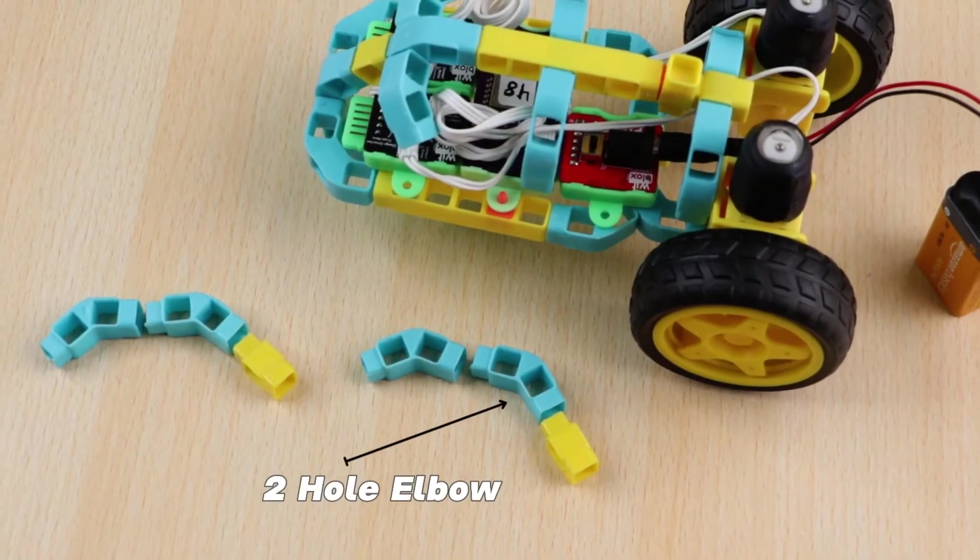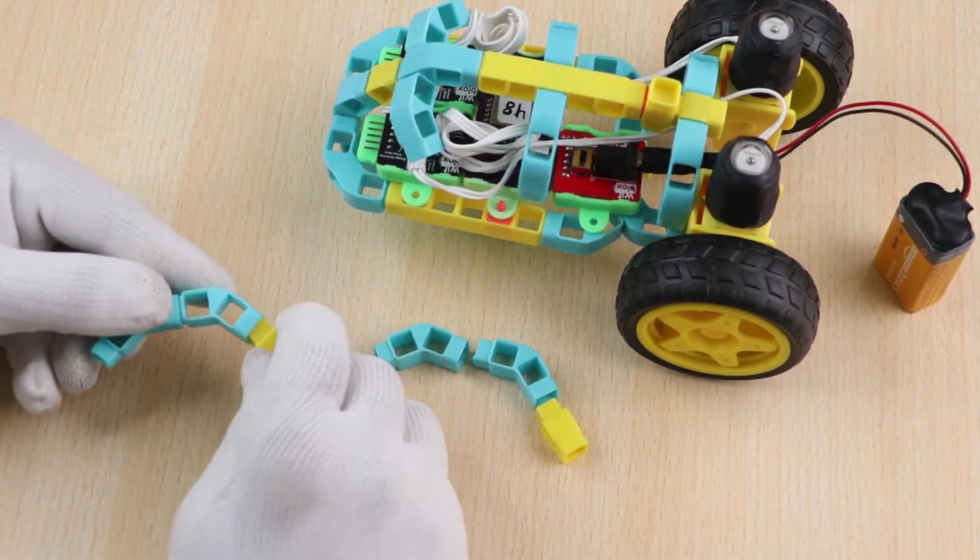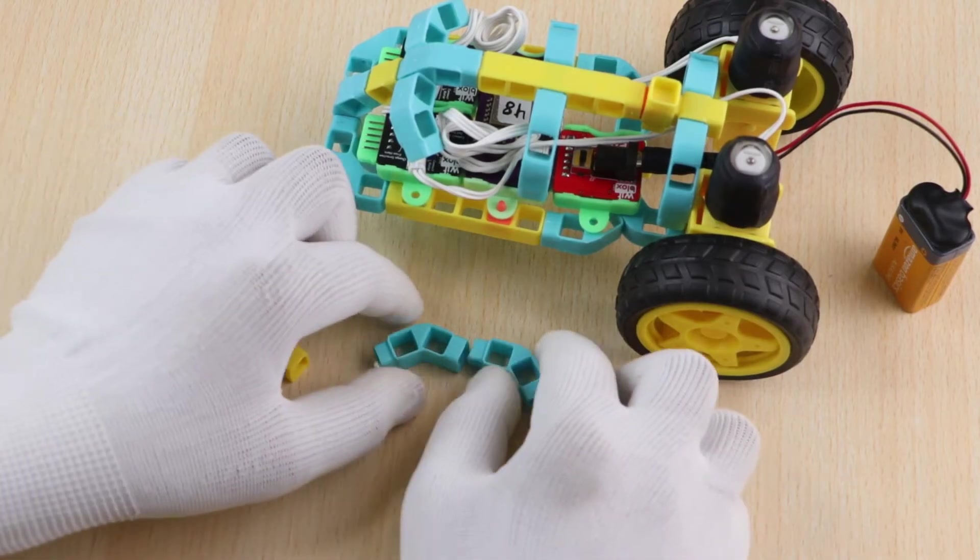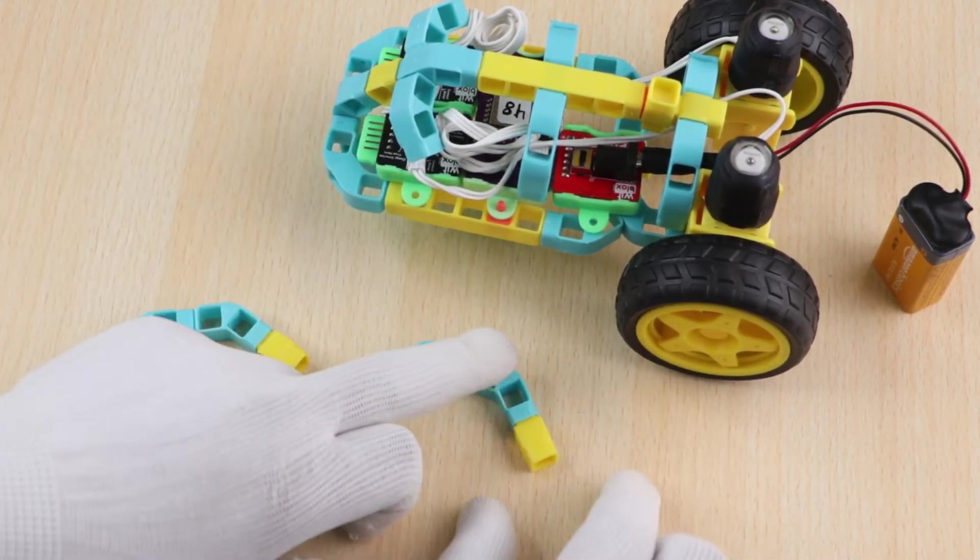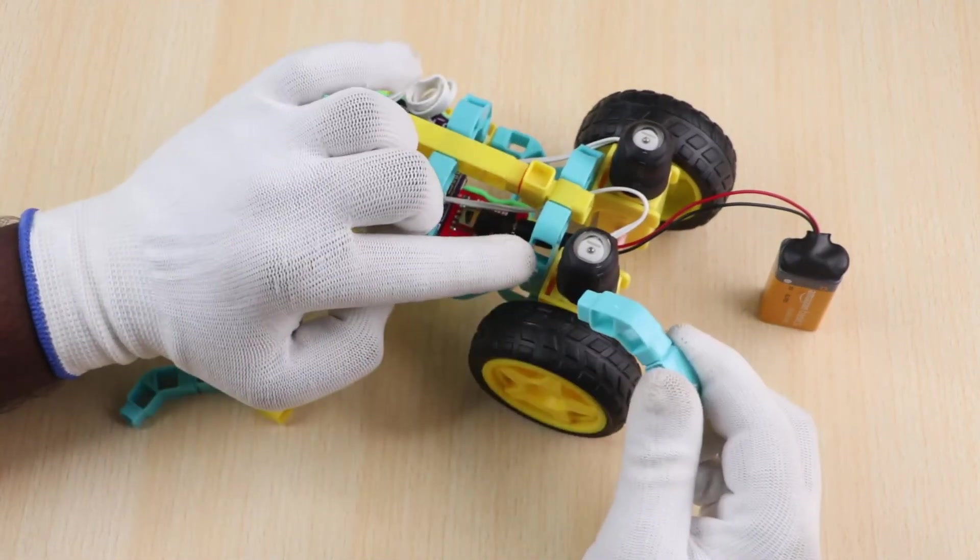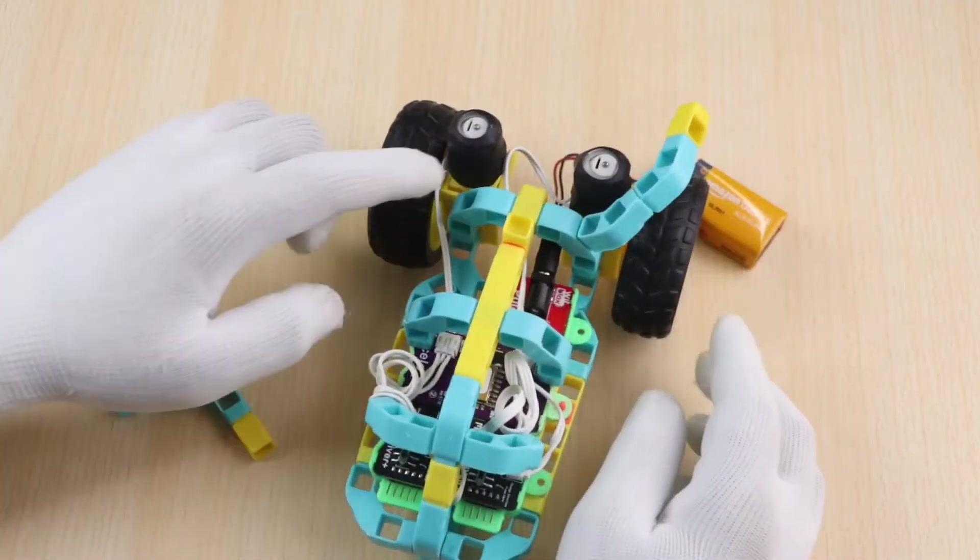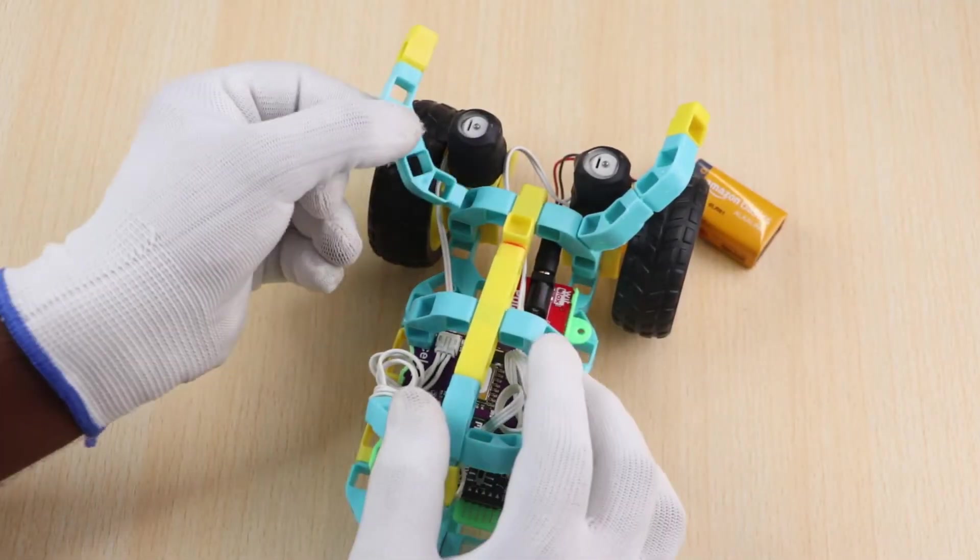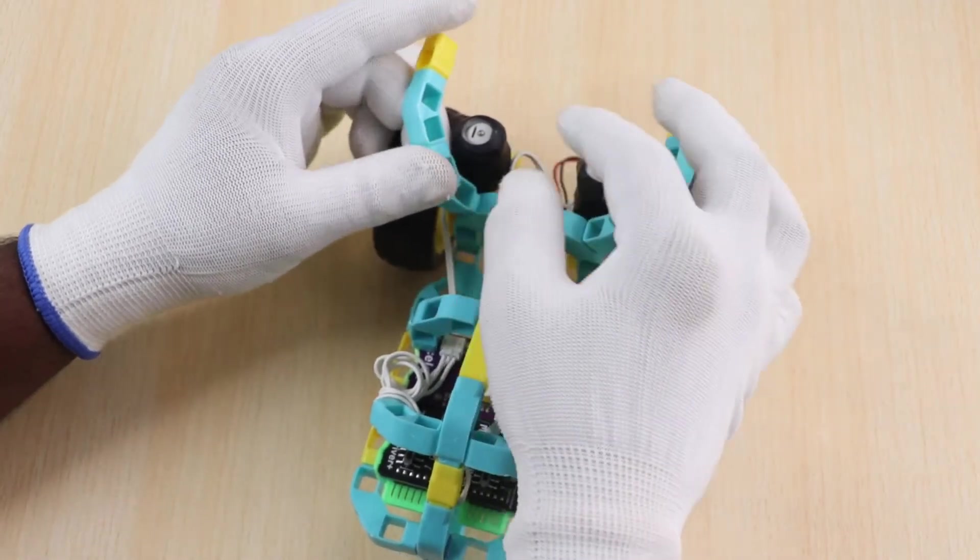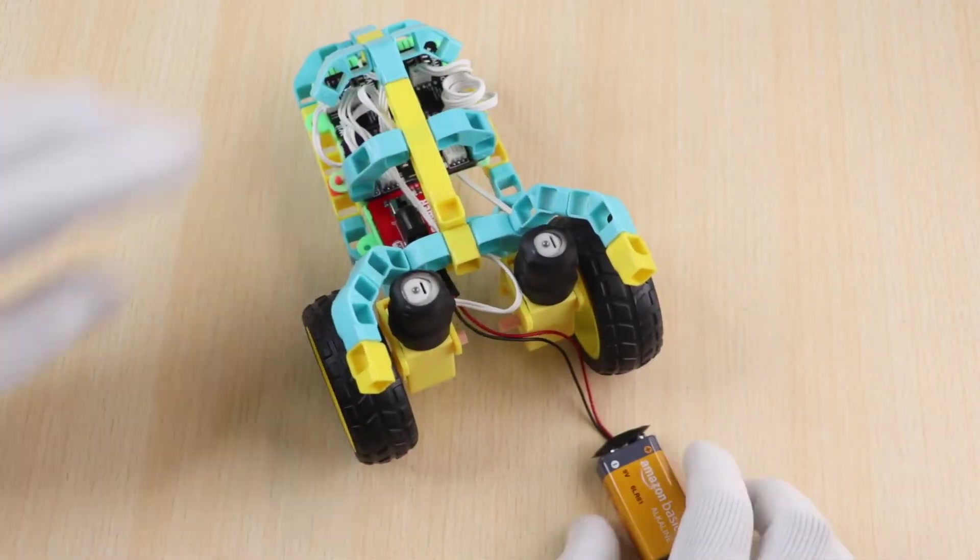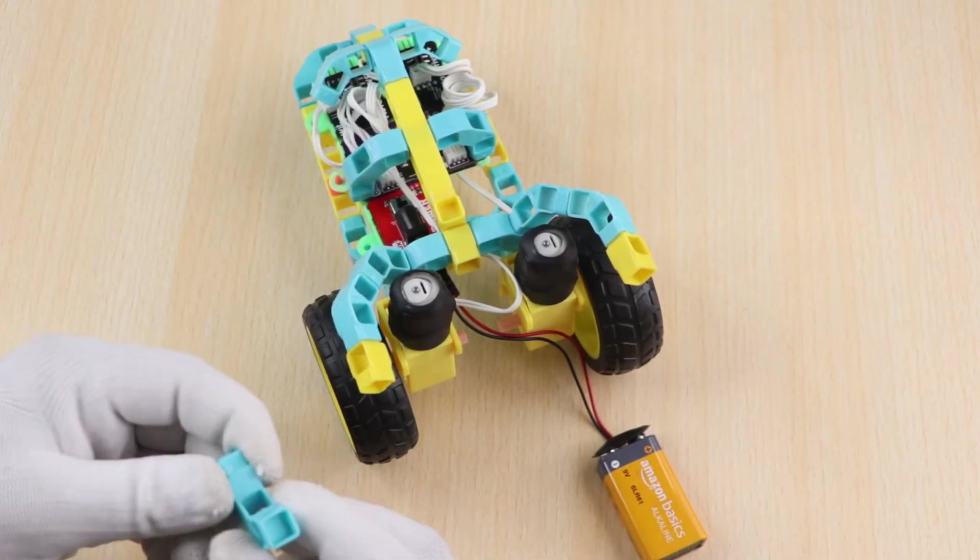Now take 4 two-hole elbows, 2 one-hole beams and join them on the structure as shown. Then take 1 three-hole elbow and attach it as shown.